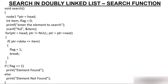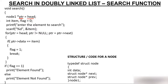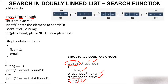In the search function, I have created a pointer PTR initialized with head. When we created the doubly linked list, we created a structure named node with three parts: data, next, and previous — two pointers to keep the address of the next node and previous node. By using typedef, I made node1 the representative of this structure. So instead of writing struct node, I use node1. I have created a pointer of type node1, initialized with head, so PTR is at head.